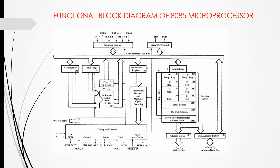Here you can see the functional block diagram of the 8085 microprocessor with various main blocks: accumulator, arithmetic logic unit, temporary register, flag register, instruction register, instruction decoder, various types of registers, stack pointer, program counter, incrementer, decrementer, address buffer, data/address buffer, timing and control unit, interrupt control, and serial input/output control.